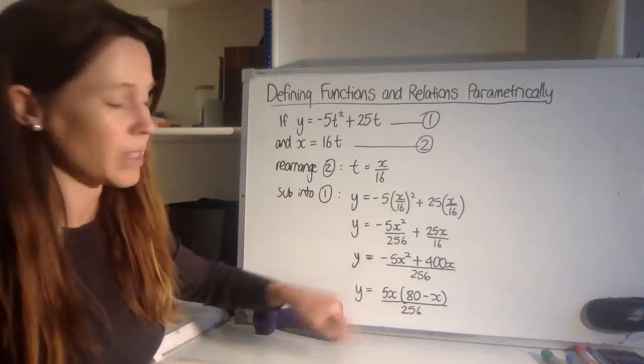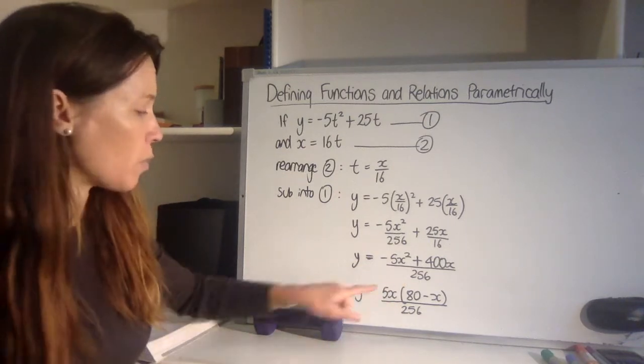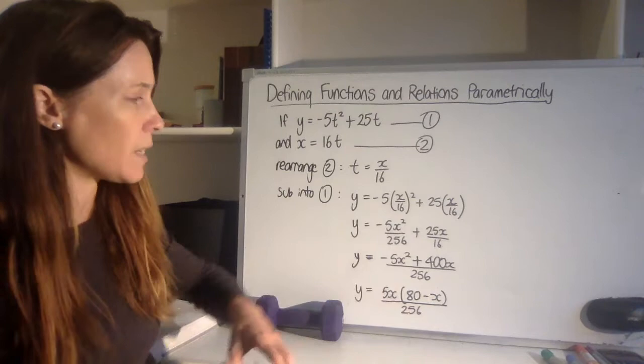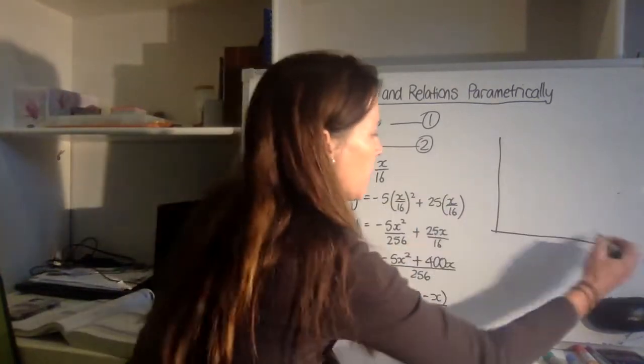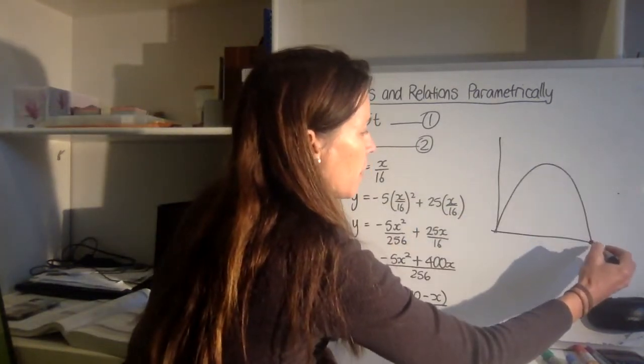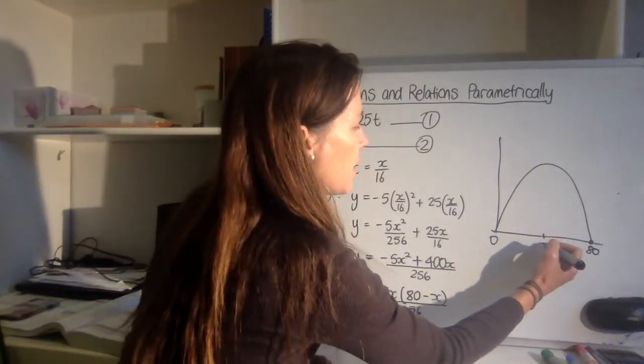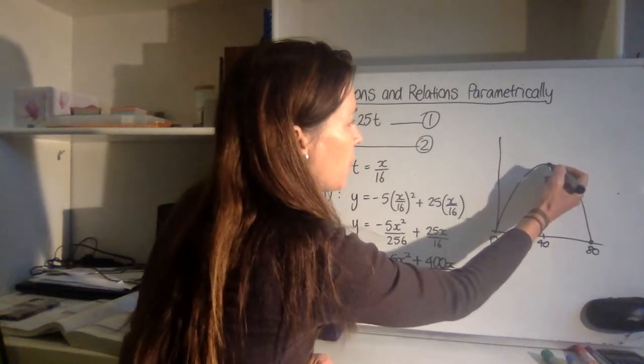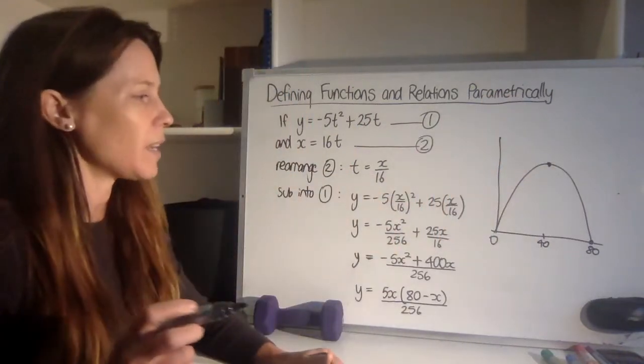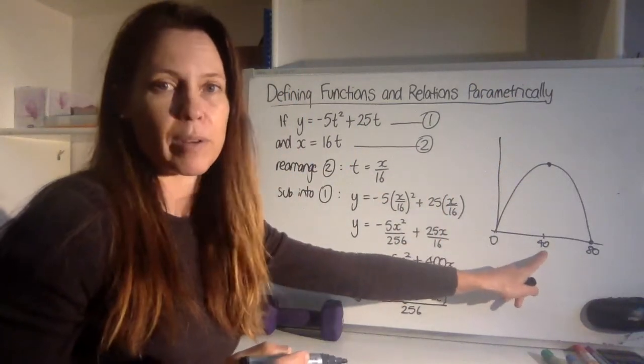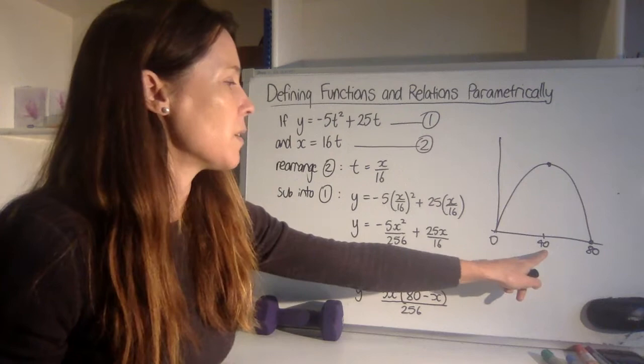And I can, by factorizing, really easily see that the zeros would be when x is 0 or 80. So that tells me an upside-down parabola with zeros at 0 and 80, I've got my basic shape. I can also then see that that zenith of the ball would happen, that highest point in the arc would happen at the midway point when x equals 40.